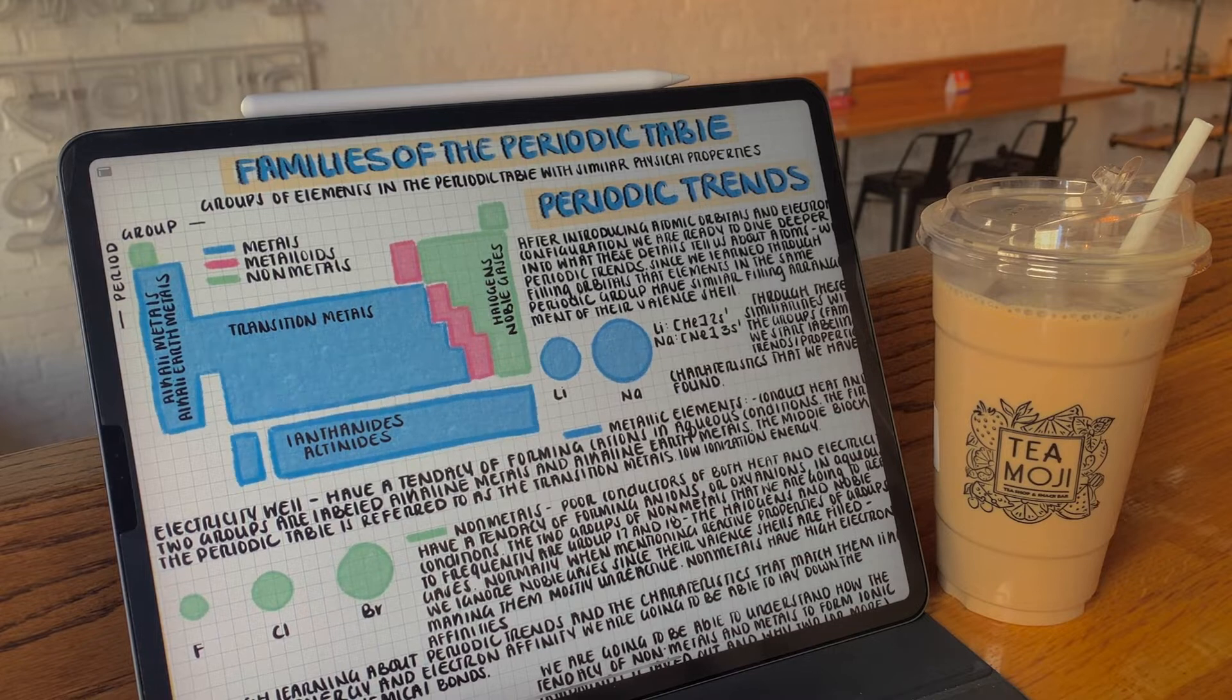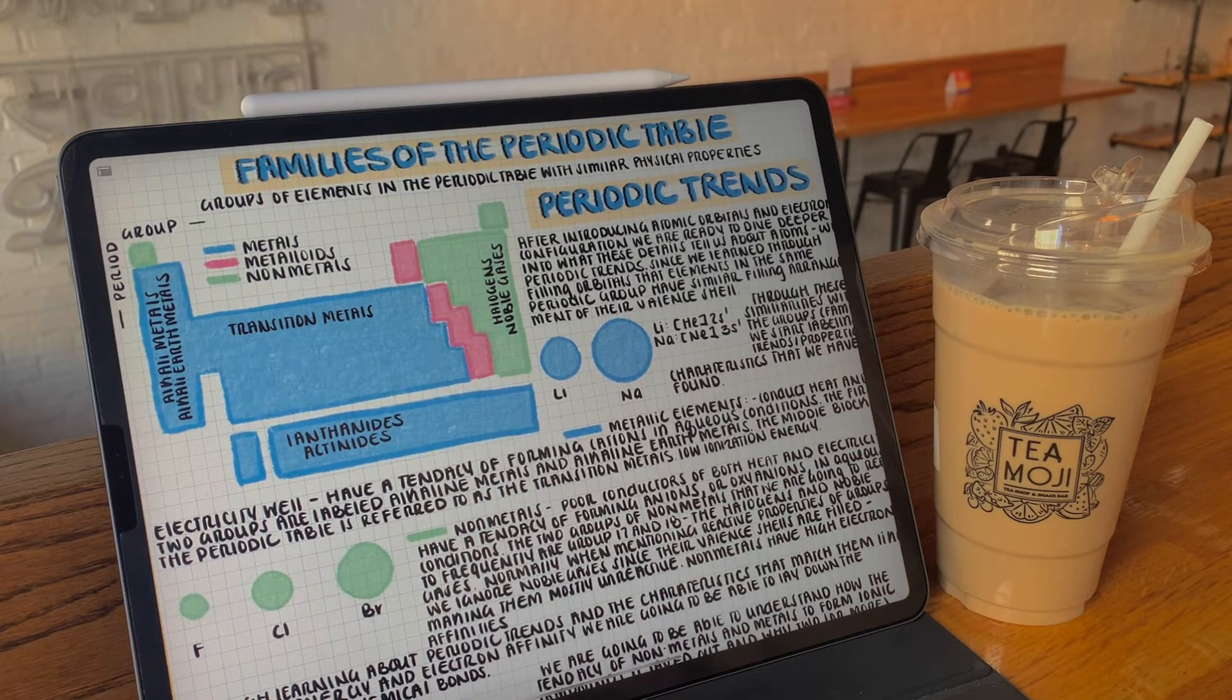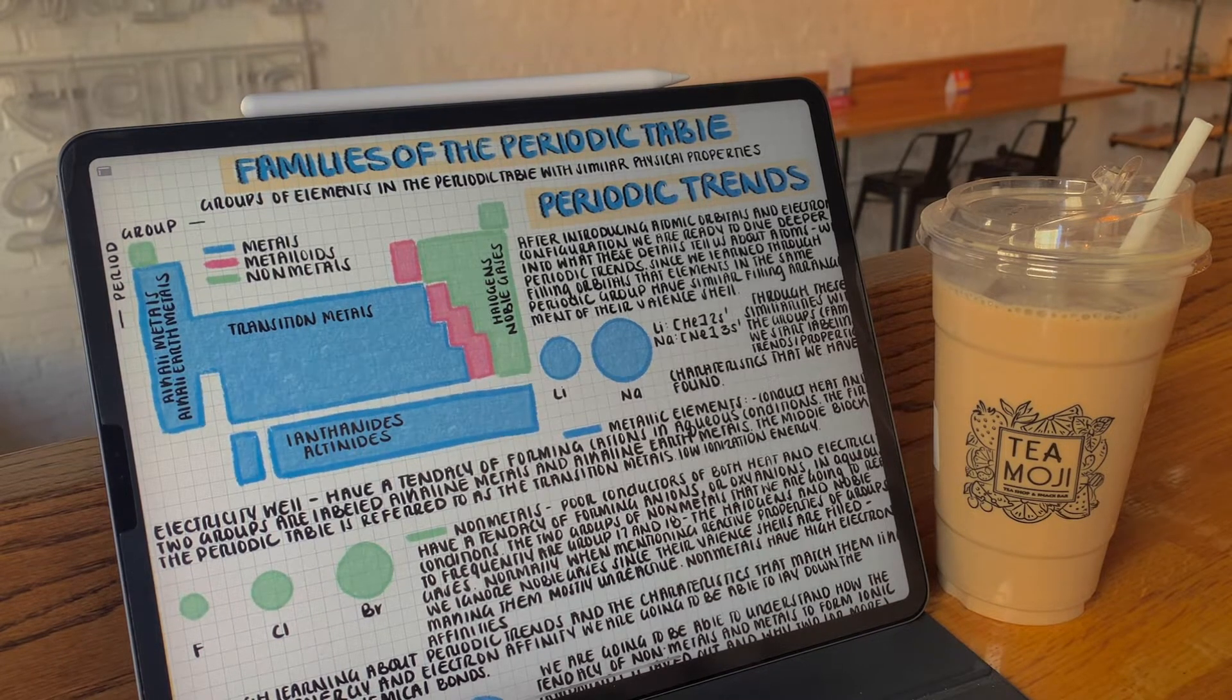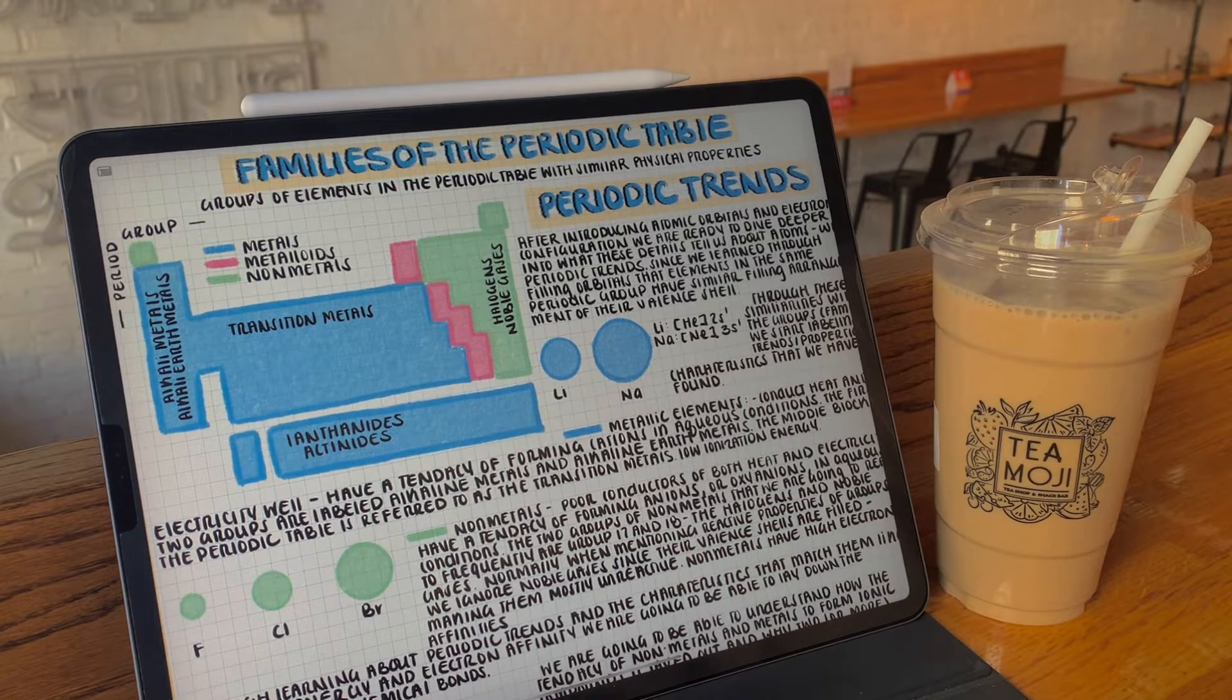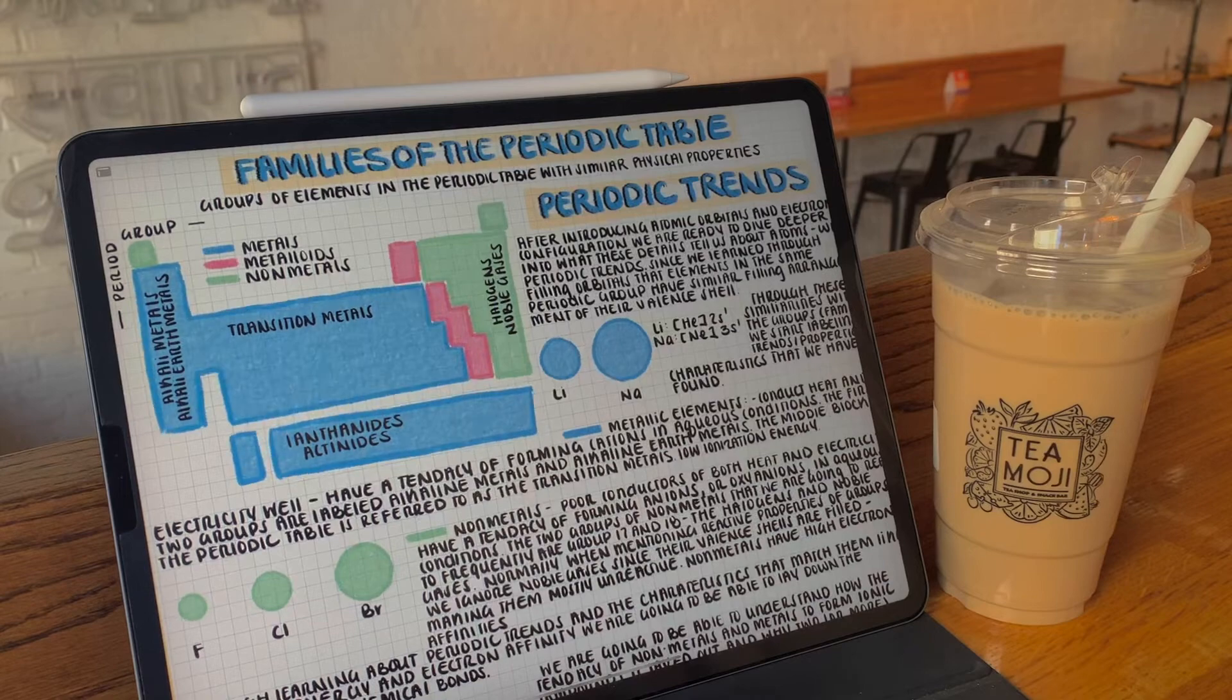Instead of focusing on memorizing the entire periodic table, it's also more important to relate properties and characteristics of elements based off their positioning and relation to other elements, something that we'll learn as we continue.